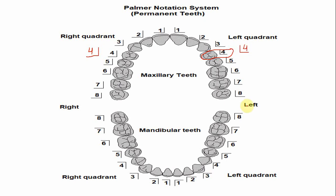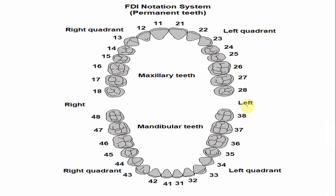In the FDI notation system, the maxillary first premolar of the right side is numbered 14 — where 1 means the right maxillary quadrant and 4 is the tooth number. For the left side, the maxillary first premolar is numbered 24 — where 2 means the left maxillary quadrant and 4 means it is the first premolar.